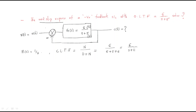From this we can write C(s), which is the closed loop transfer function multiplied by R(s). The transfer function is 6/(s+11) and the input R(s) is 1/s, giving C(s) = 6/[s(s+11)].